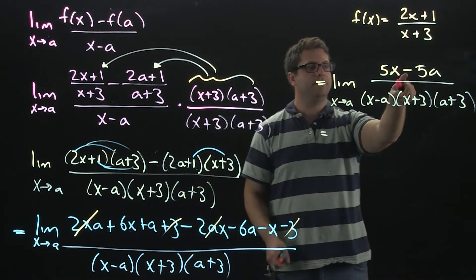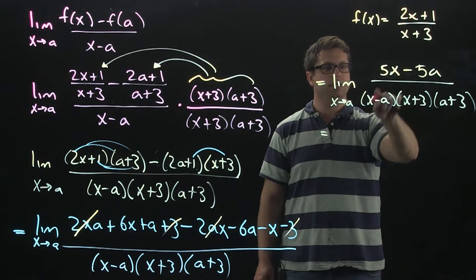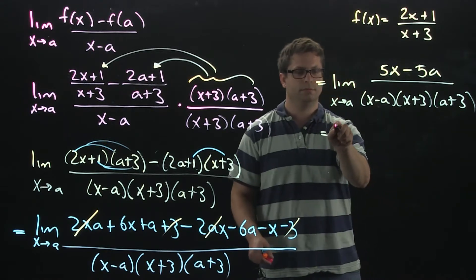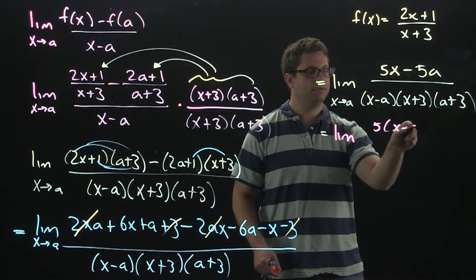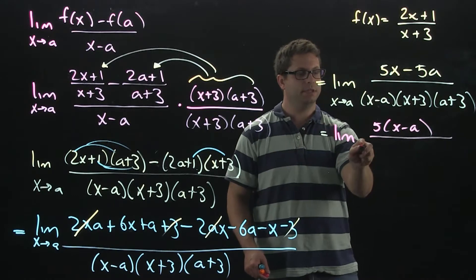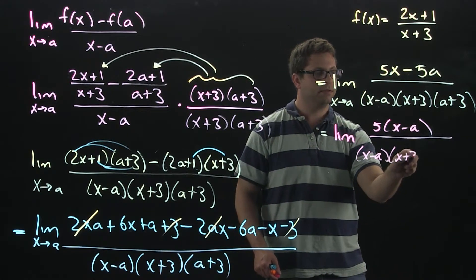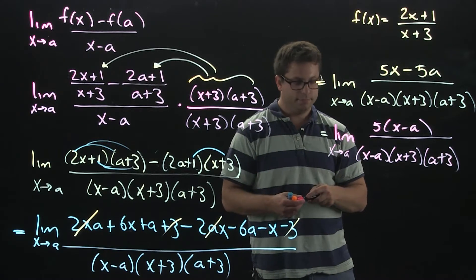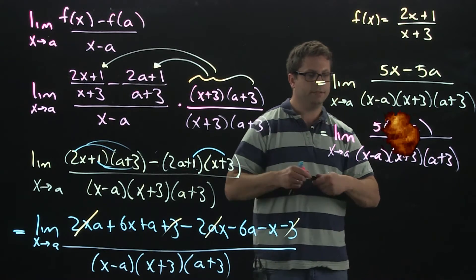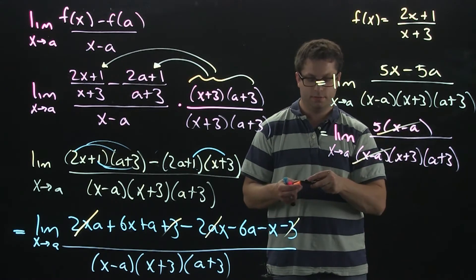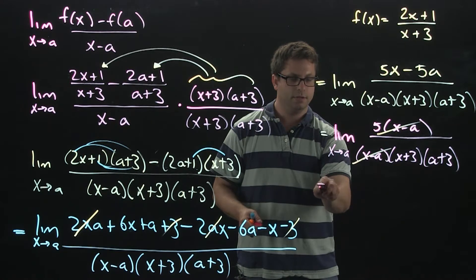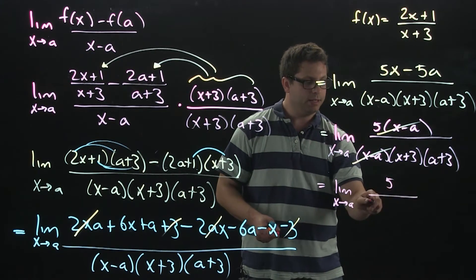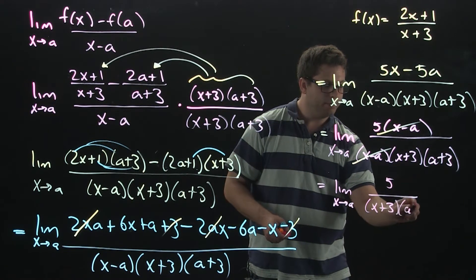Now, I can factor a 5 out from top because then, once I factor a 5 out, I'll have an x minus a left over to cancel with that. Go ahead and cancel. So, that's the limit, x approaches a. So, we'll have the 5. And then on the bottom, x plus 3 and a plus 3.